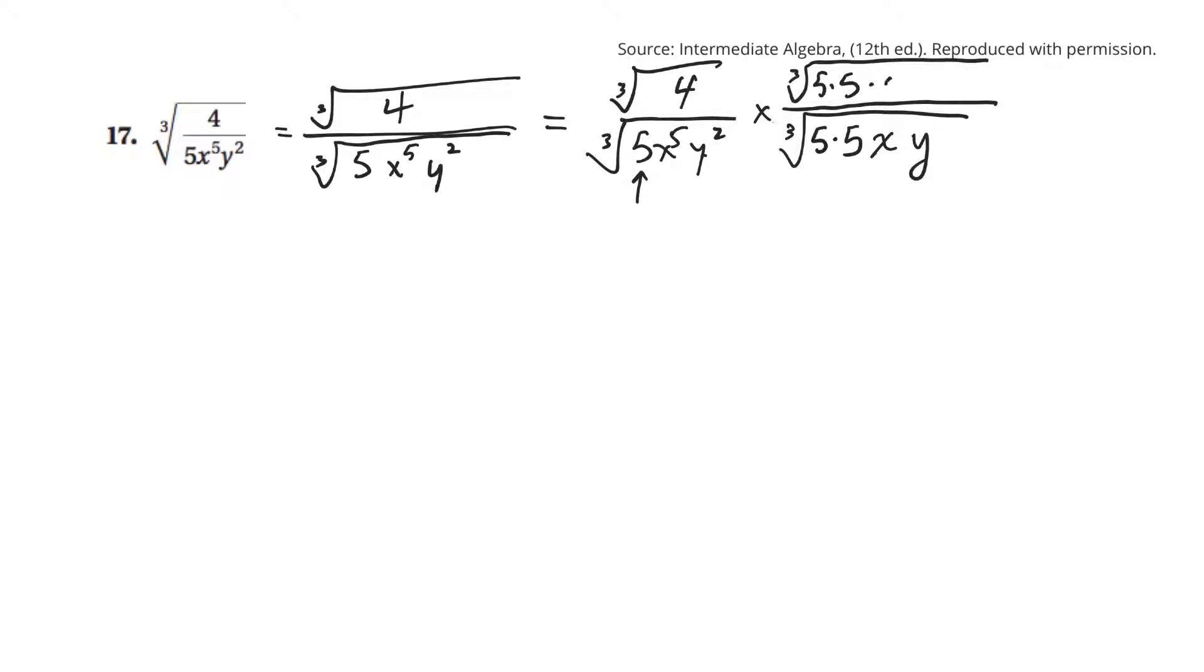Okay, so let's see what that is going to do. So, what I do to the bottom, I do to the top. So, that's going to give me, on the top, let's just write what we have there. It would be 4 times 5 times 5 times x times y. All over.